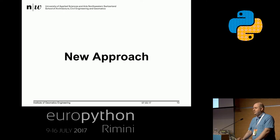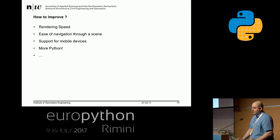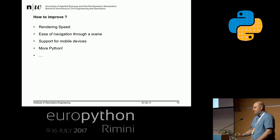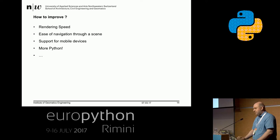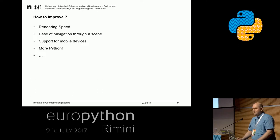I was not really happy with it. The rendering speed is not really that great, and the ease of navigation is not great either. Maybe all of you know Google Earth — most people look at it once or twice and then end up using Google Maps. Another problem is that support for mobile devices is not great: WebGL runs on mobile but you really need the latest and most expensive device. And of course the most important argument — I want more Python.